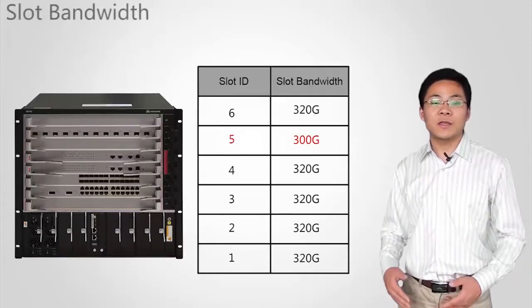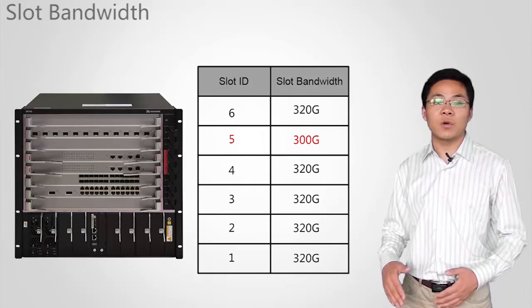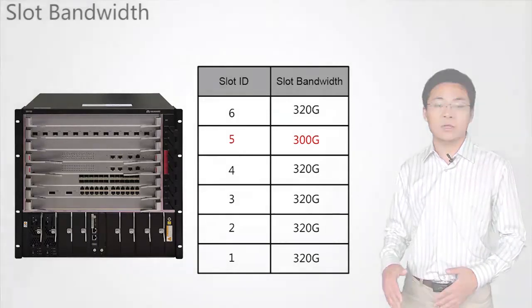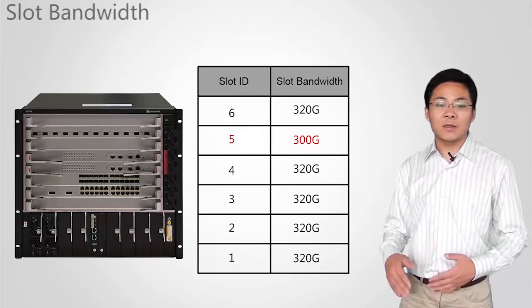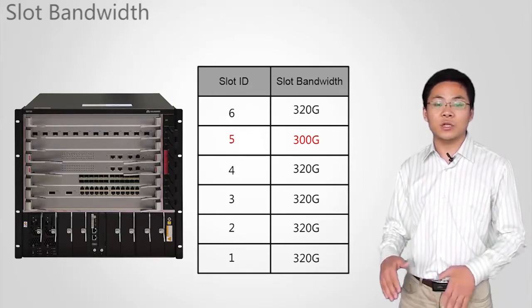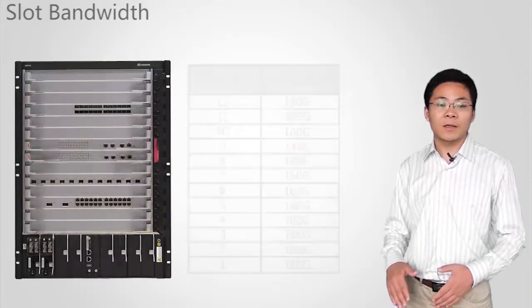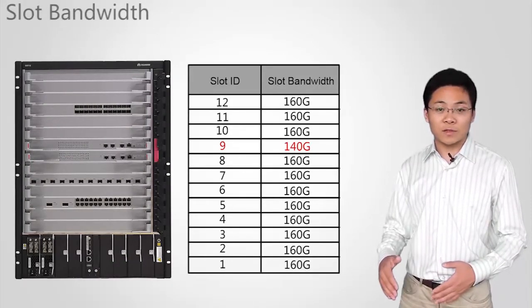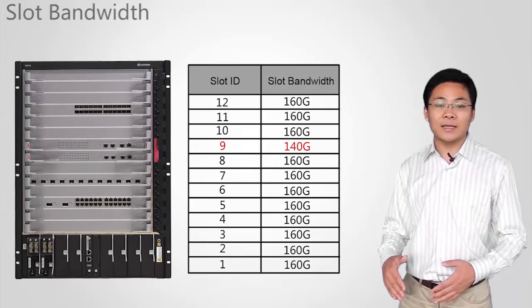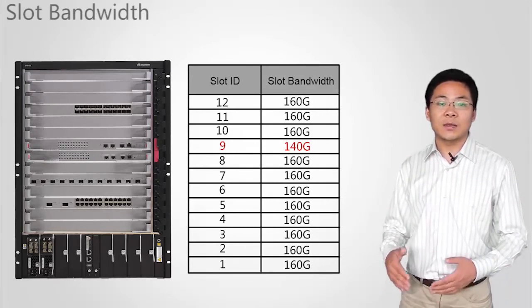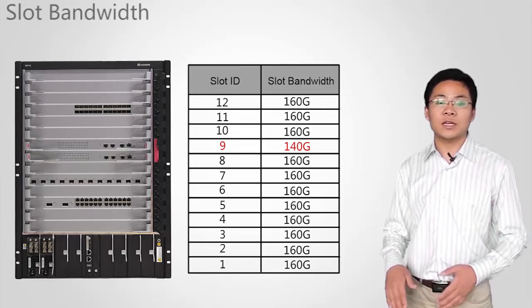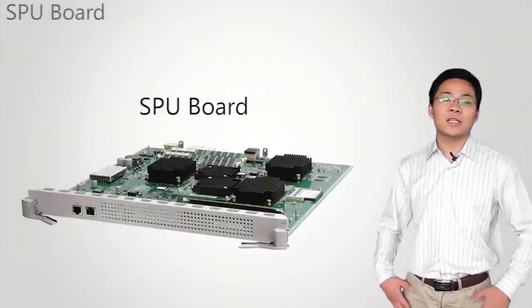Slot bandwidth. This figure shows the bandwidth for S9706 slots. Slot 5 provides 300 gigabits per second. The other slots provide 320 gigabits per second. This figure shows the bandwidth for S9712 slots. Slot 9 provides 140 gigabits per second. The other slots provide 160 gigabits per second.